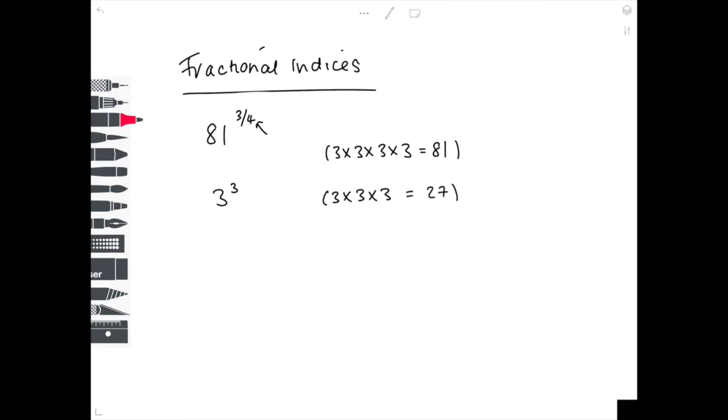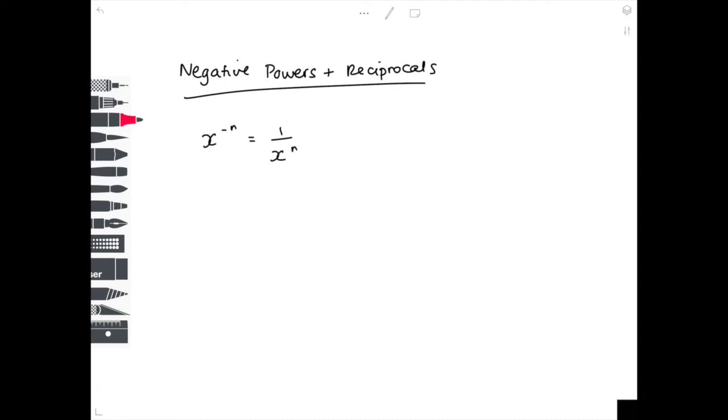Now we need to look at negative powers and reciprocals when referring to indices. Here is your general rule which will be obeyed for all negative powers: x to the -n equals 1 over x to the n. This rule may be used as long as x doesn't equal 0. Now if you don't like what I'm saying or drawing, let's dive straight into some examples so we can see that it actually works.